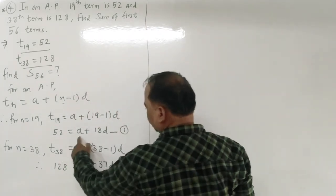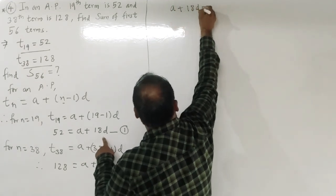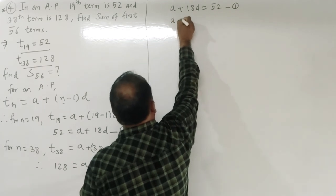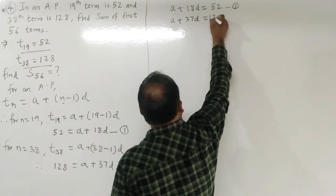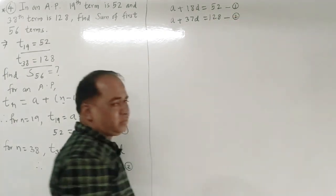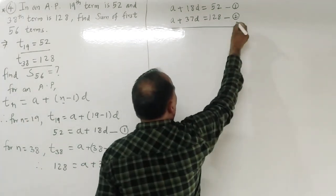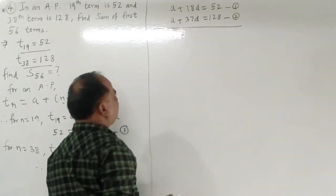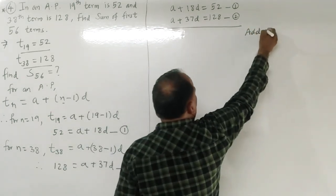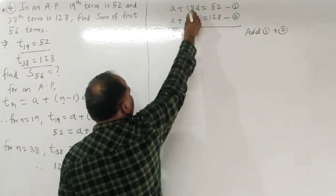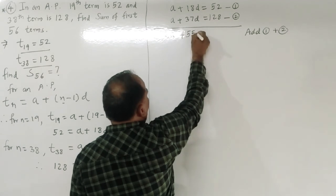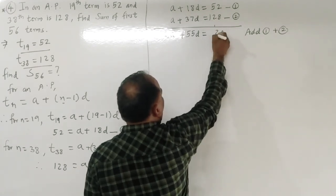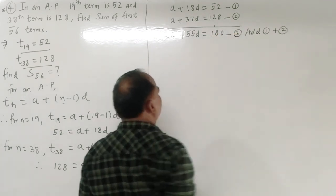We have two equations: a + 18d = 52 (equation 1) and a + 37d = 128 (equation 2). Instead of subtracting, we add the two equations to get 2a + 55d = 180 — equation 3.